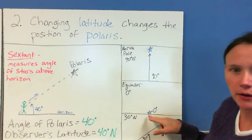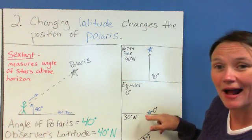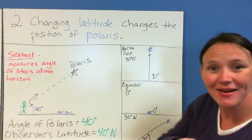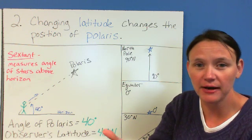If you're at the equator, right here, it's directly on the horizon. And so it's not any degrees above the horizon. It's at zero. You're at zero degrees latitude.